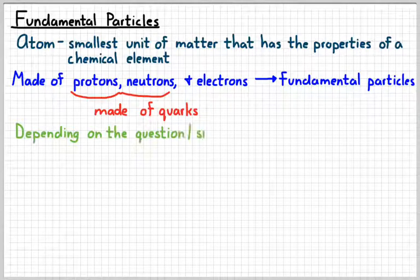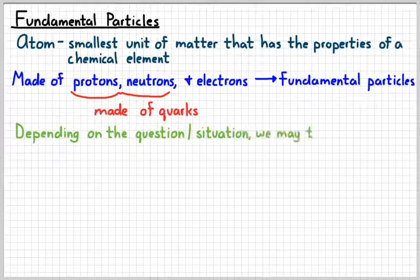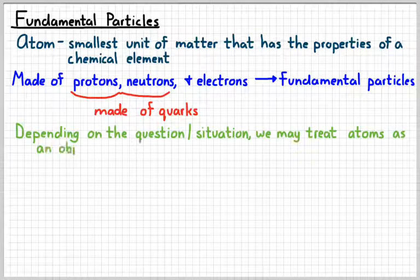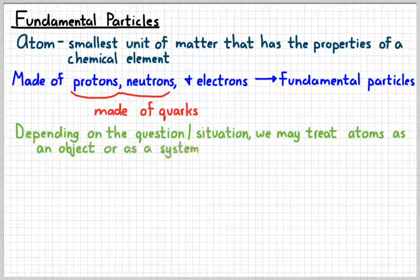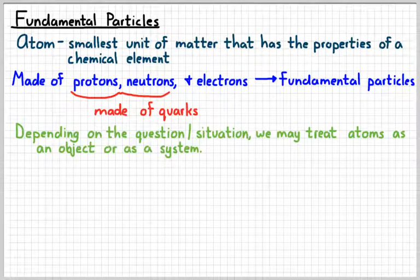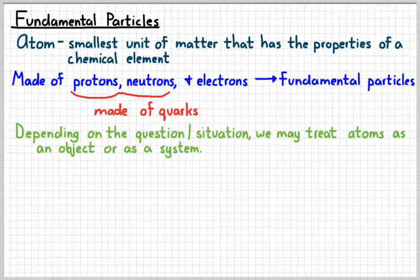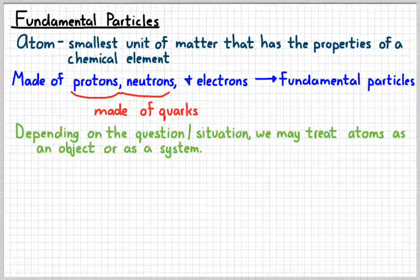So depending on the situation again, we may treat something as small and tiny as an individual atom as either an object or a system. And in chemistry, you probably didn't realize this, you switch back and forth between atoms being an object versus atoms being a system. In physics, it's going to be important that we define the difference between when we're treating something as an object versus when we're treating it as a system.